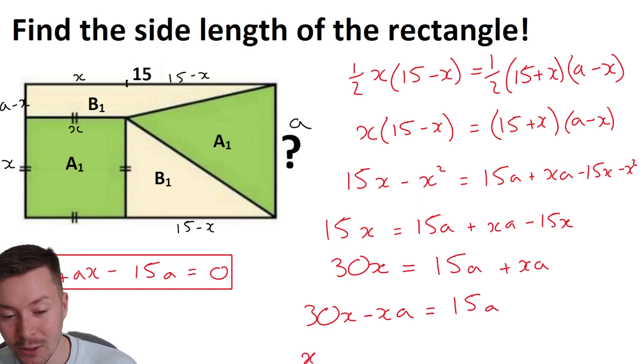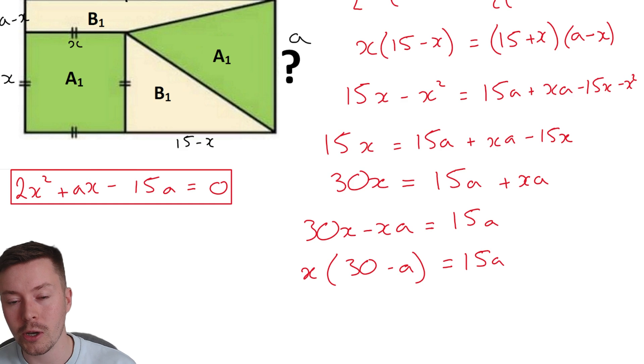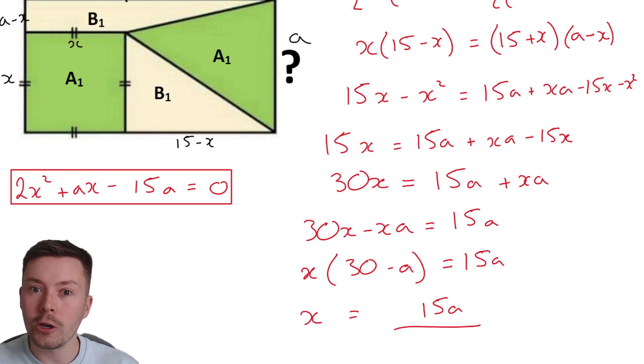I'll think of it in a second, my brain's just completely gone. And then I'm going to factorize the X out. 30 minus A equals 15A. And then I'm going to scroll down very slightly. I'm going to divide both sides here by 30 minus A. Terms, that's the word I was thinking of, terms. I want every term with X in it on one side. Right, divide by 30 minus A and we get this.